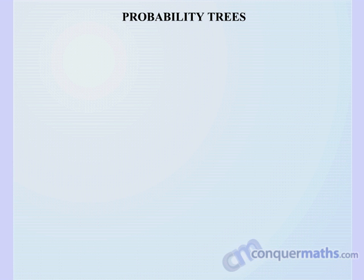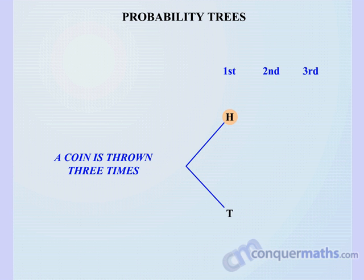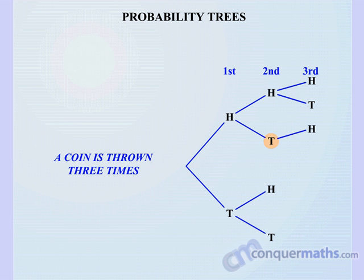In this lesson we are looking at Probability Trees. Consider this scenario: a coin is thrown three times — a first throw, a second throw, and then a third throw. On the first throw we could get a head or a tail. You have seen tree diagrams before. Probability Trees are a little bit different in that we are going to assign probabilities, percentages, or decimals to each of the branches.